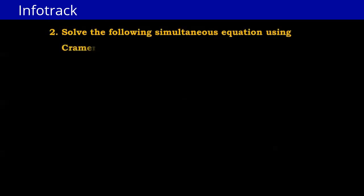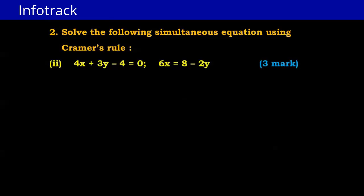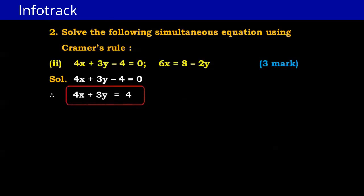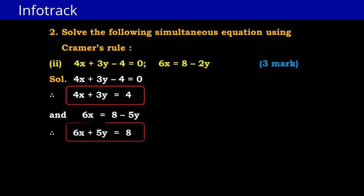Now let's start with a question based on this. Solve the following simultaneous equation using Cramer's Rule. The equations are: 4x + 3y − 4 = 0 and 6x = 8 − 2y. First we write these in standard form: 4x + 3y = 4, and rearranging the second equation, 6x + 2y = 8.